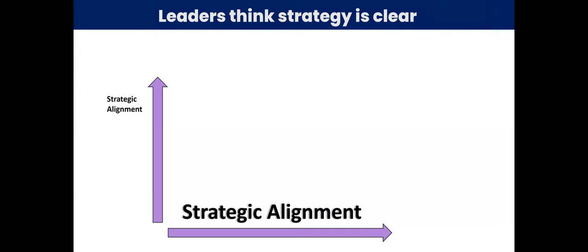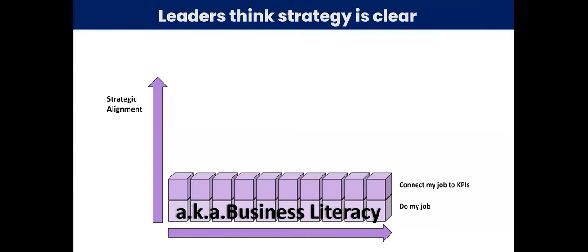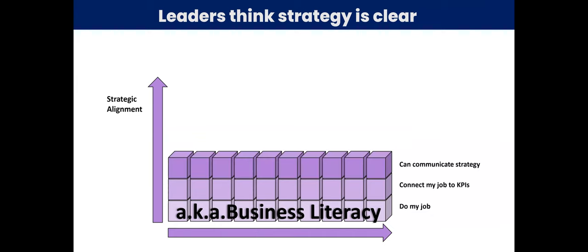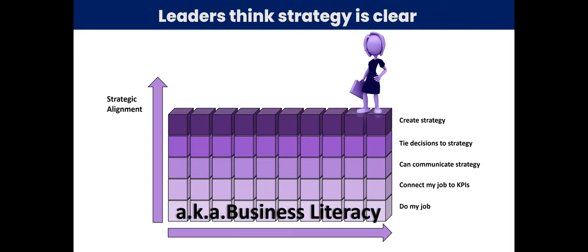So we start to see the strategic alignment, or we can call it, again, business literacy, has levels of its own. Number one, I do my job. That's kind of the basic. Number two, I know how to connect my job to specific key performance indicators. Number three, you can communicate what the strategy of the organization is. You pretty much know where it is that you're going and what's important. At the higher levels, you can tie different decisions to that strategy. And maybe at the top level, you are in charge of creating strategy and developing those metrics. So when we think about data literacy, it's important to start to think about who is literate.